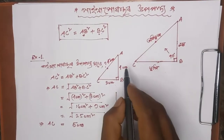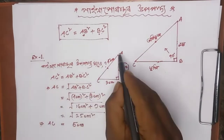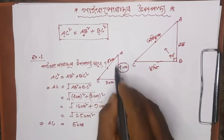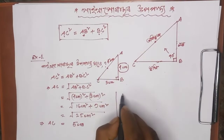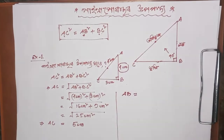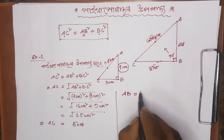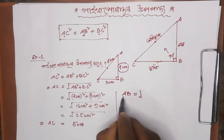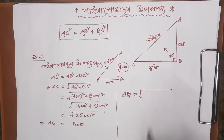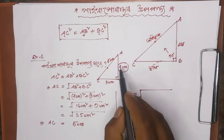Suppose you don't know AB. You know AC and BC. If you don't know AB, I will explain AB. If you don't know AB, you can find AB.